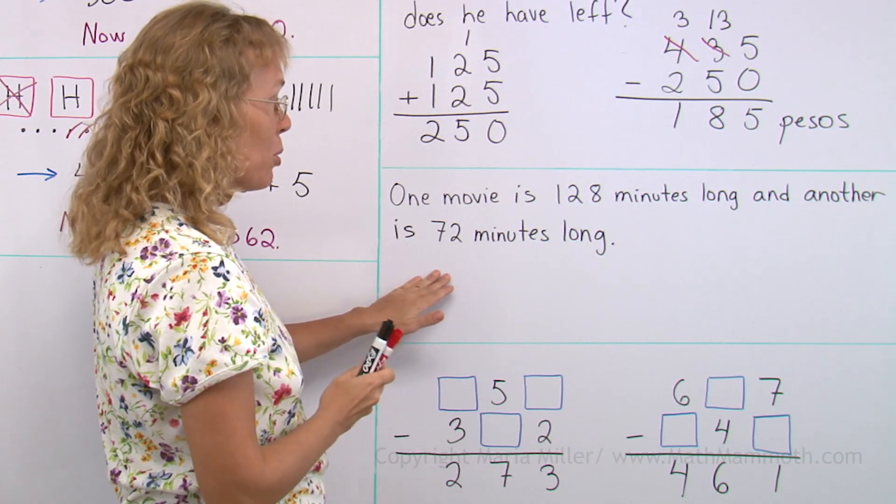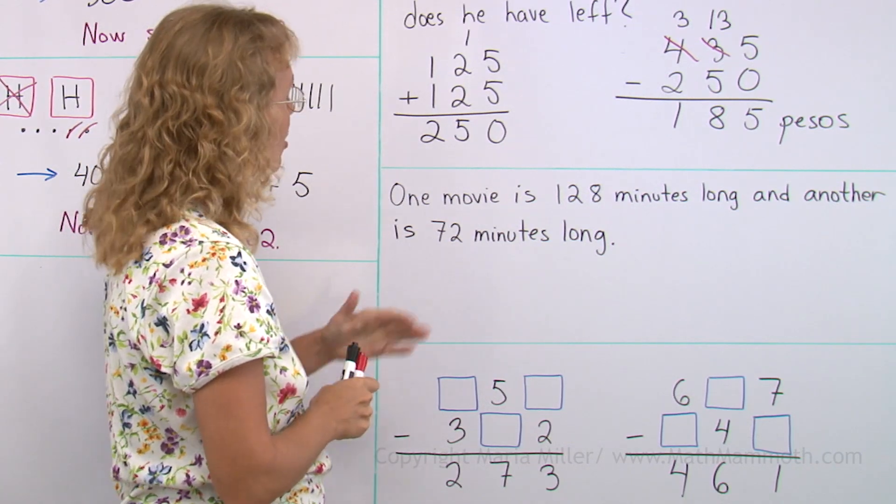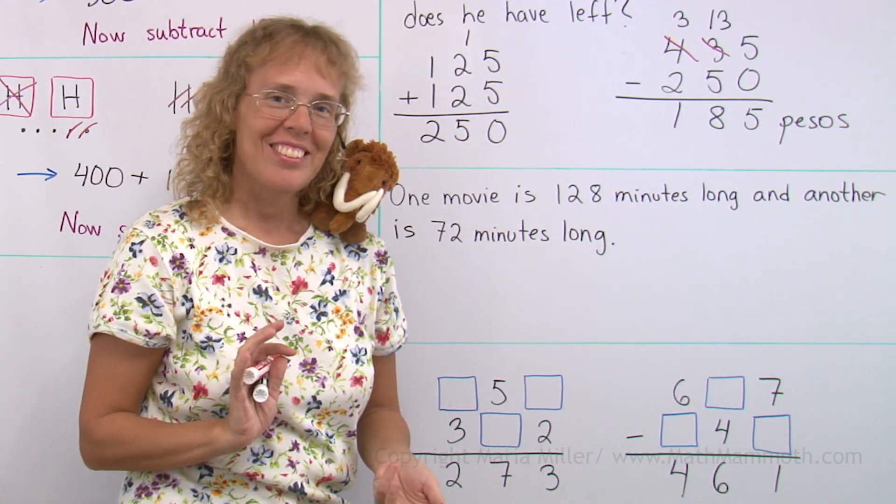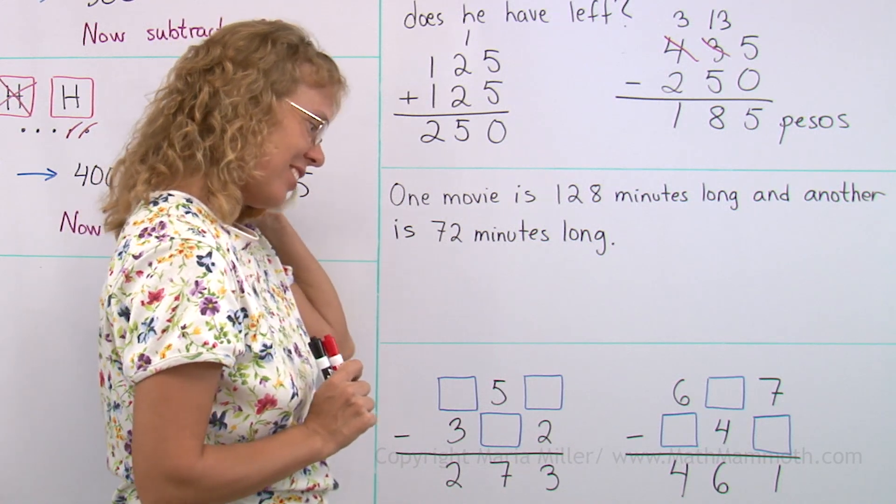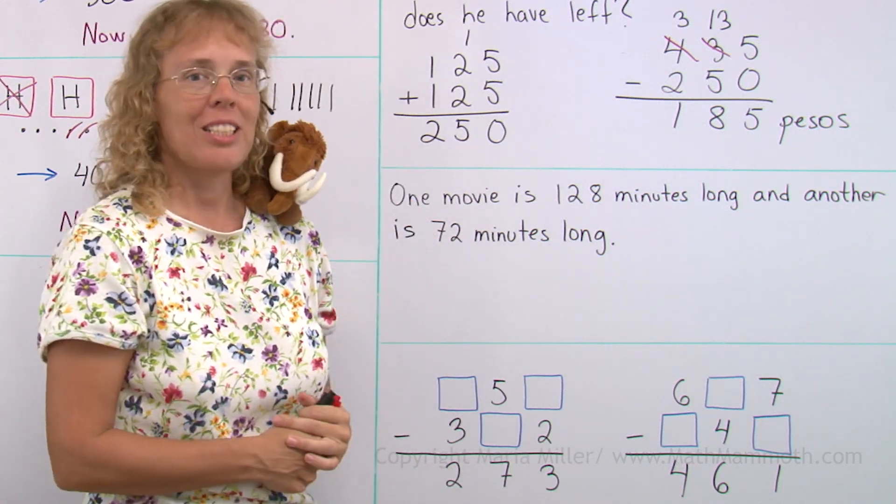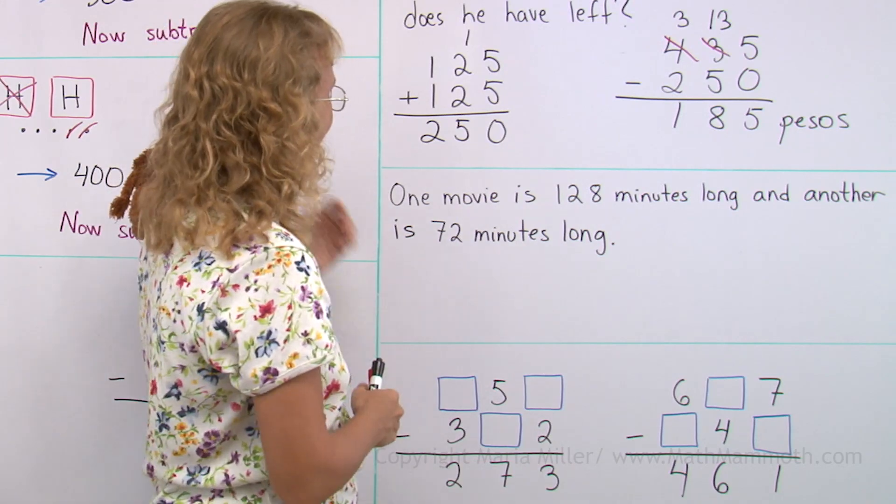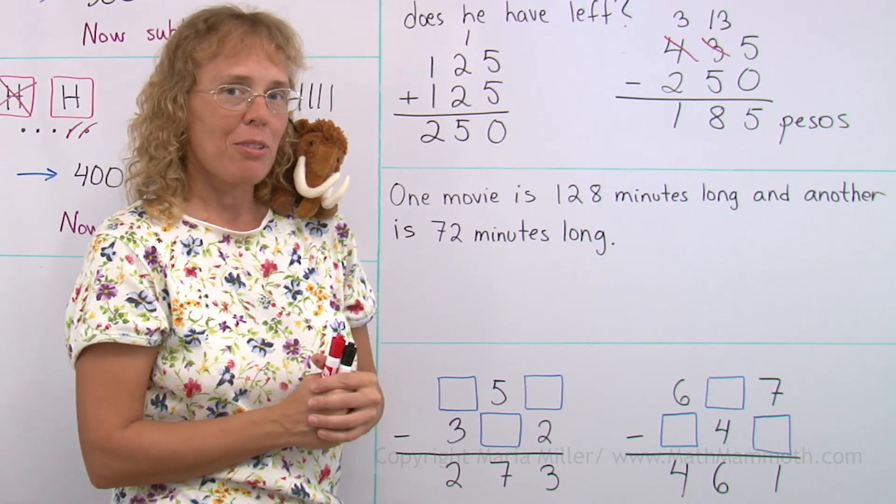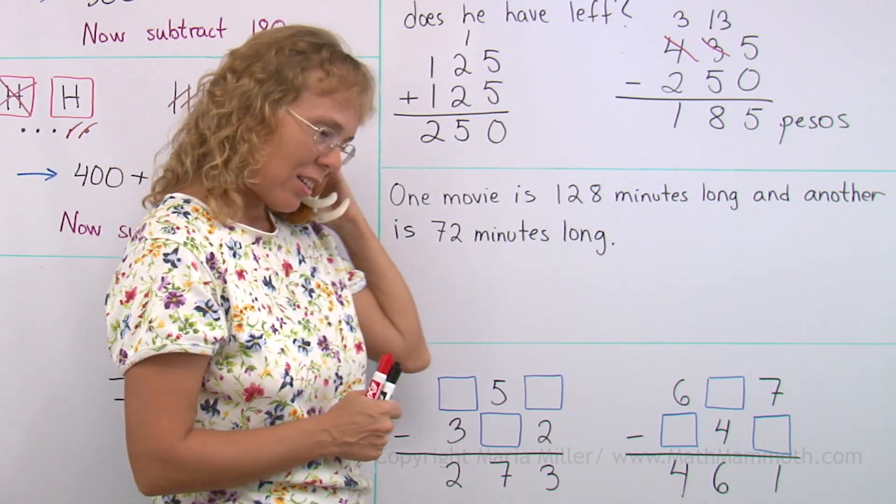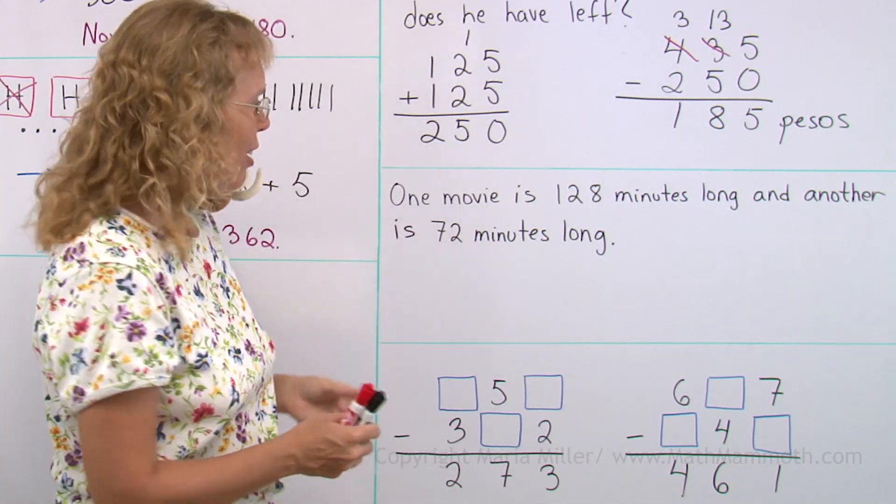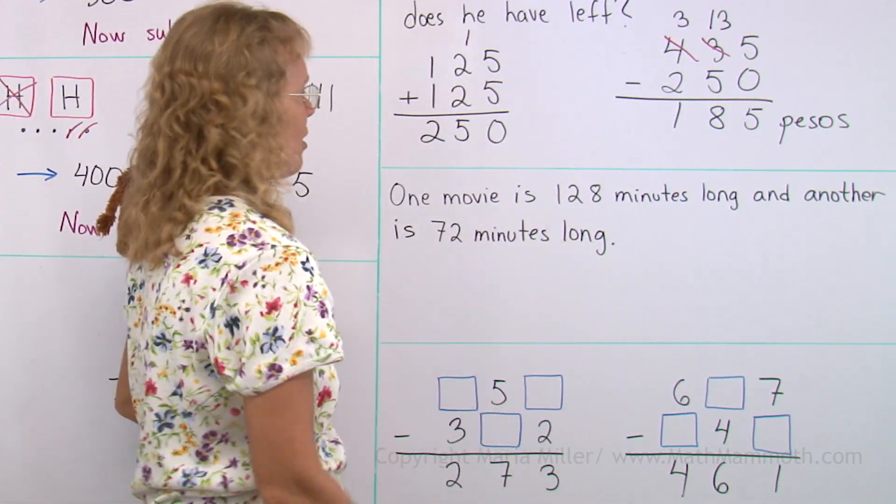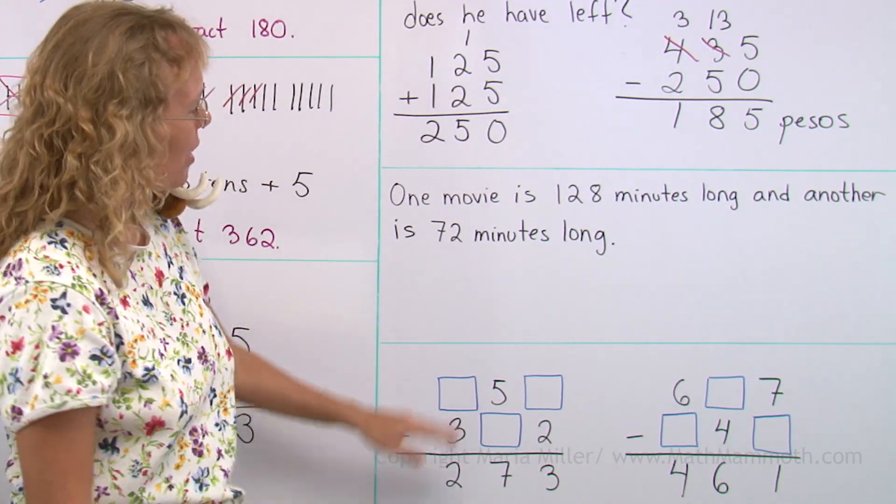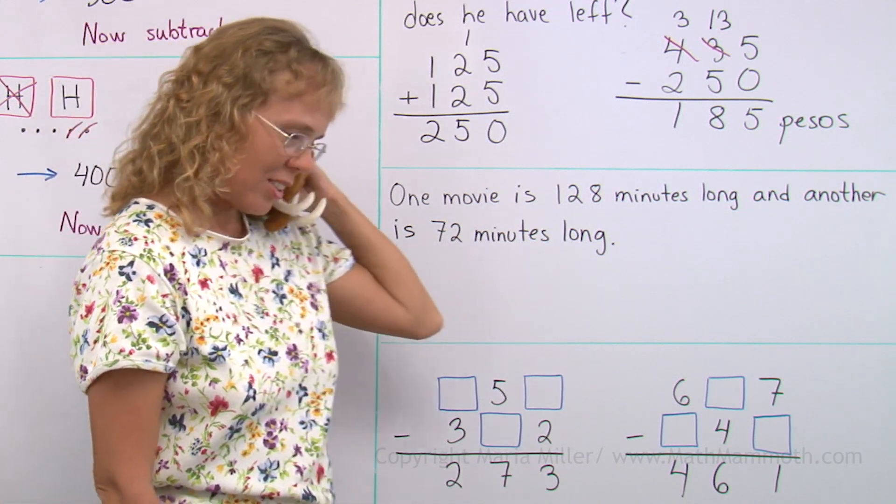Next comes a nice word problem. One movie is 128 minutes long and another is 72 minutes long. You can make up the question again. Oh Matthew, oh what are the movies about? That's Matthew's question. Okay, well I don't know, well let's say that one of them is about elephants and the other one is about mammals. Which one is about mammals? Well of course the longer one is about mammals - it's a mammoth movie, you know.